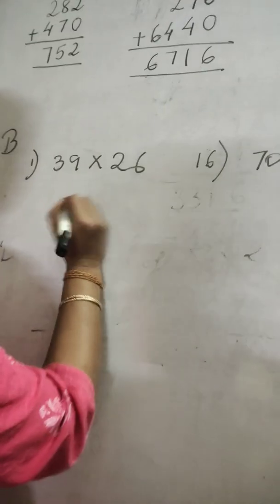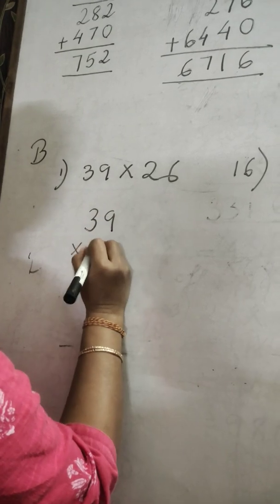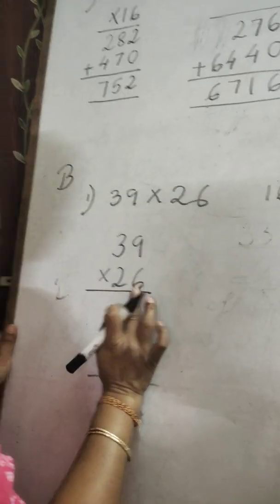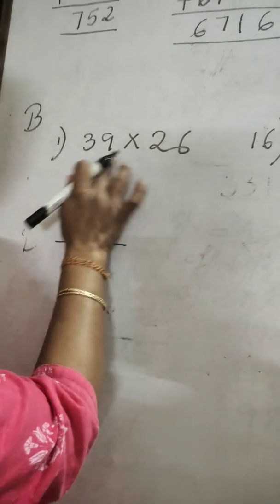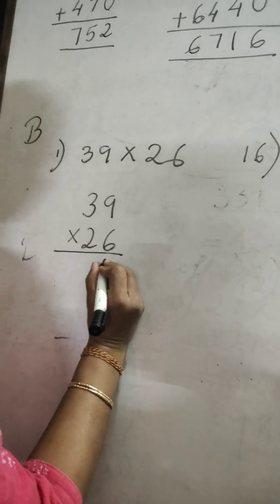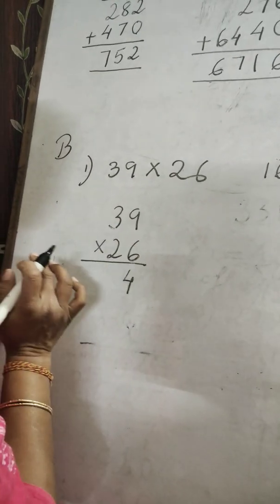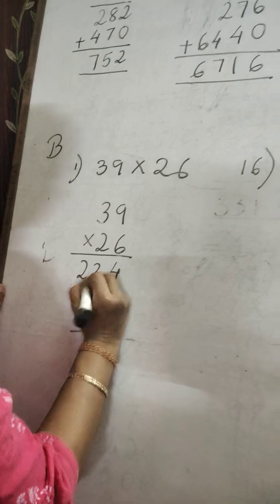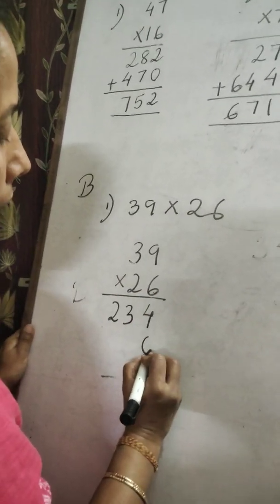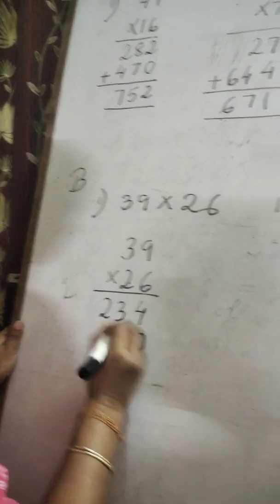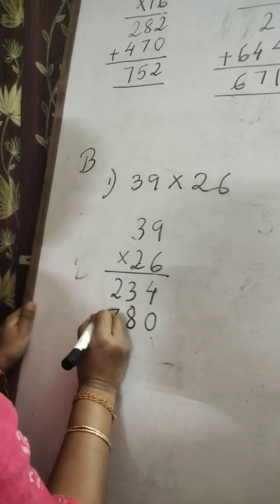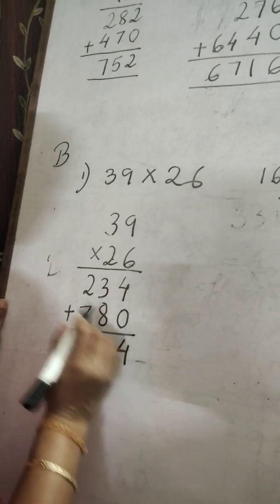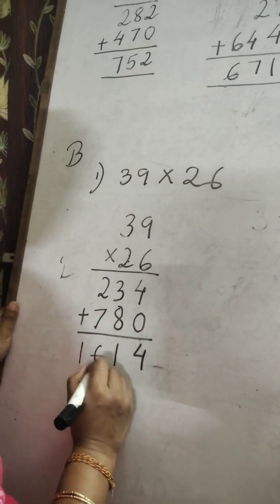Now from Exercise B, arrange the numbers in columns as they are given horizontally. Multiply 6 with the two-digit: 6 nines are 54, write 4 carry 5. 6 threes are 18 plus 5 is 23. For the second digit, leave the first place — put 0. 2 nines are 18, carry 1. 2 threes are 6 plus 1 is 7. Now add: 8 plus 3 is 11 carry 1, 7 plus 1 is 8 plus 2 is 10. This is the answer.